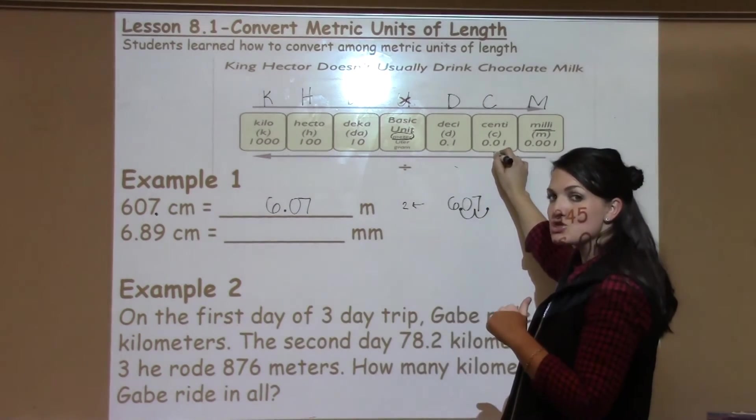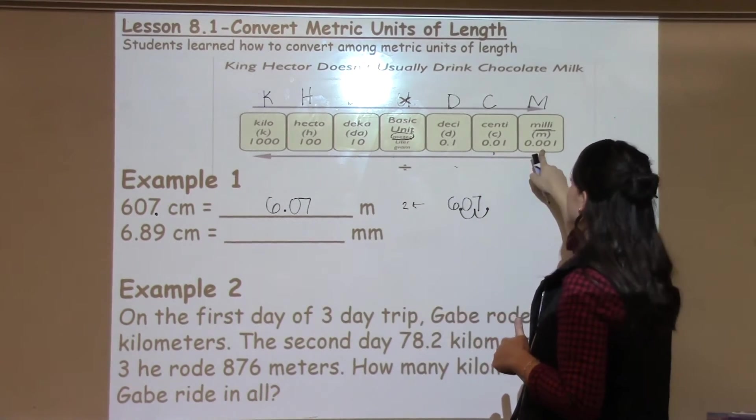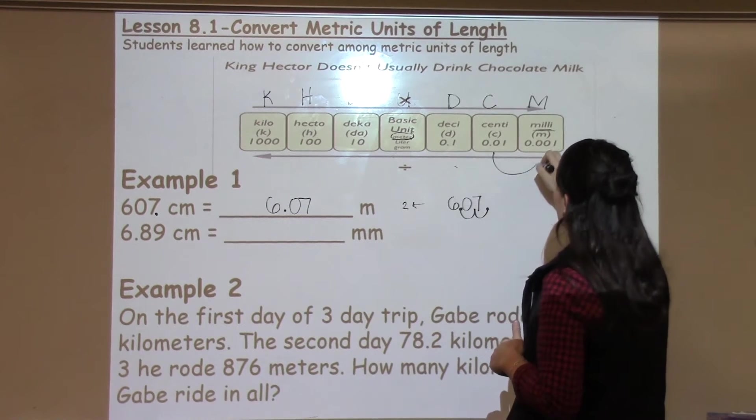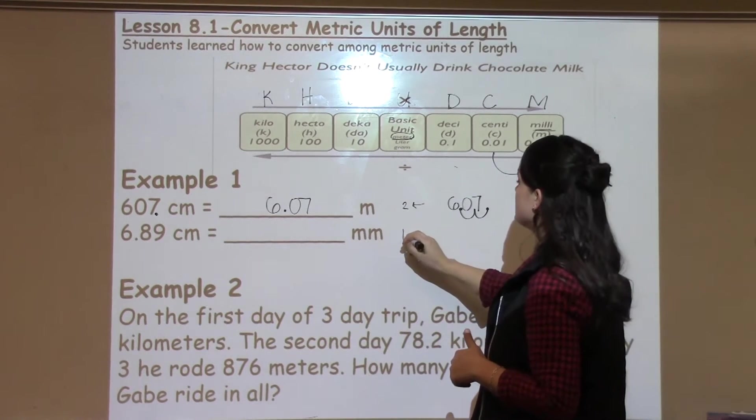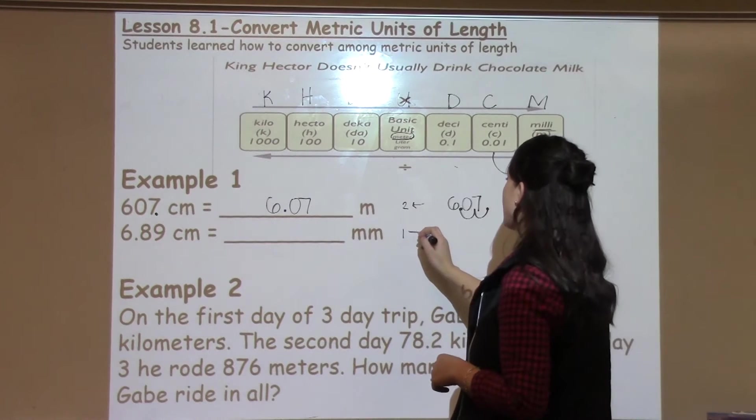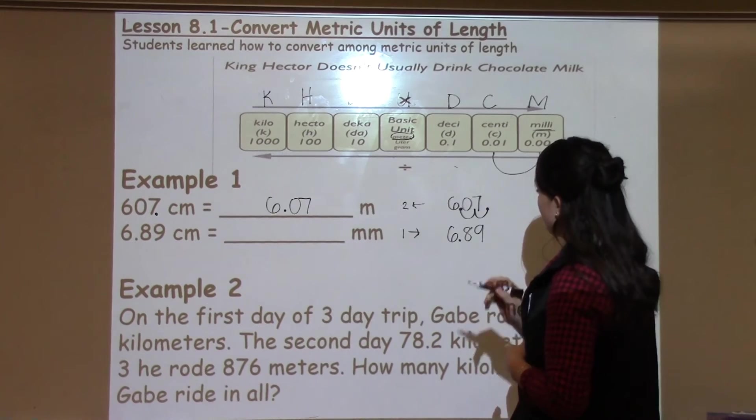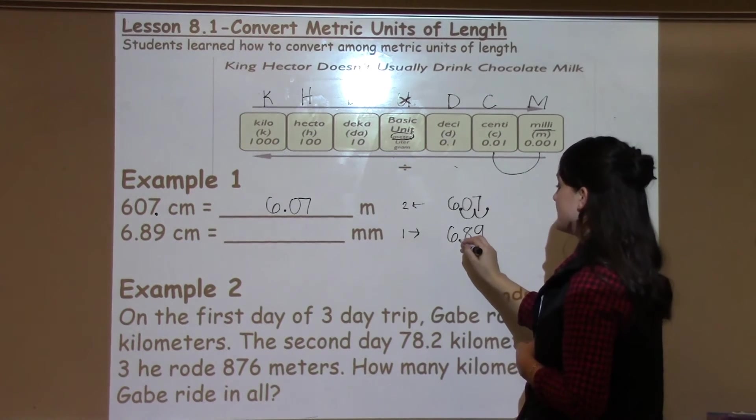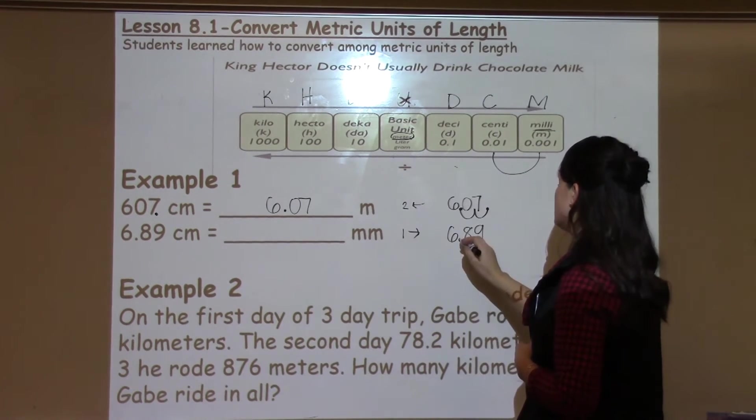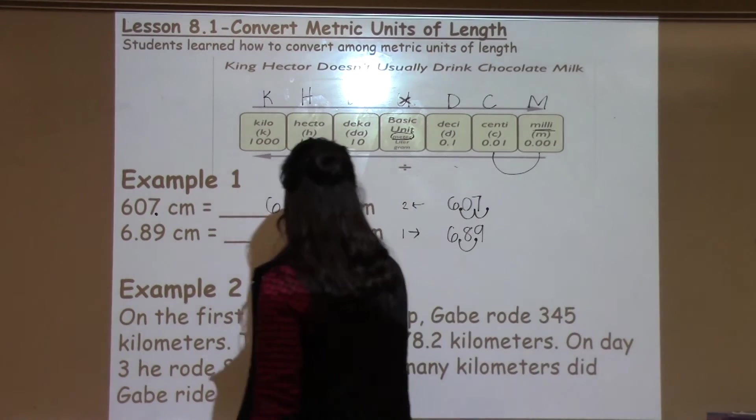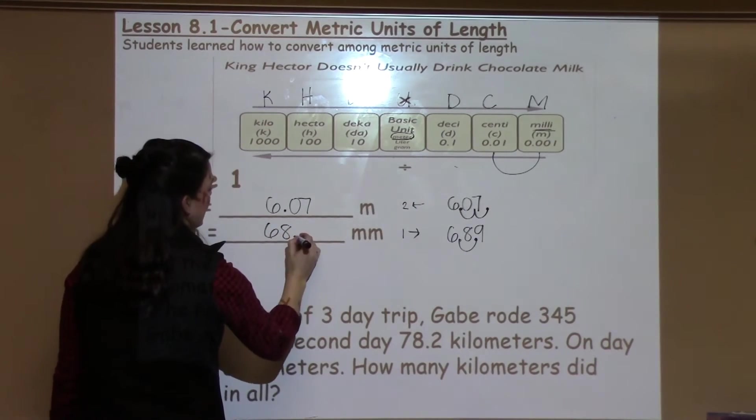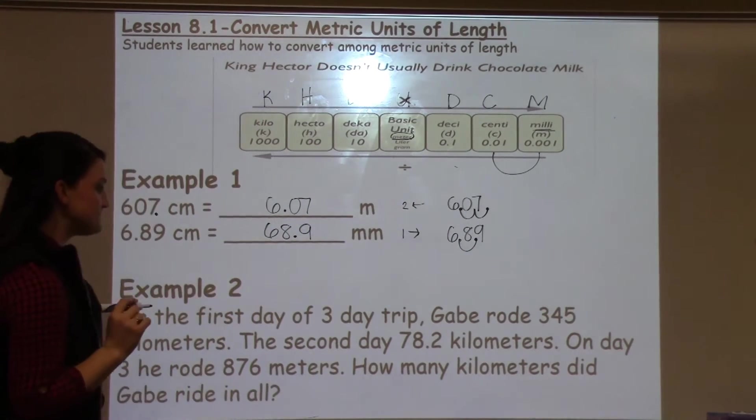Notice that this has an extra M, so I'm actually moving to the milli side this time. That's going to be one space and I'm moving to the right. So I make an arrow that way. I'm going to rewrite my number with my decimal point, and then I'm going to move my decimal point one space to the right for a final answer of 68.9 millimeters.